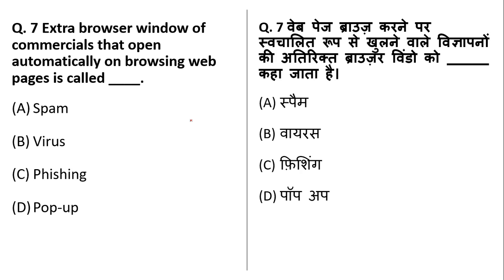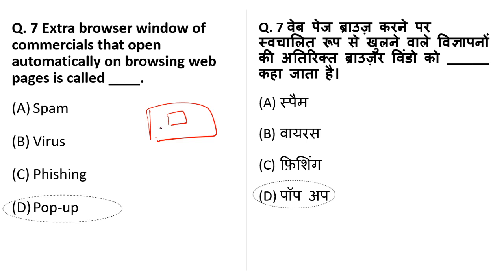An extra browser window of commercials that opens up automatically on browsing web pages is called a pop-up. Whenever you open a window and a small window opens automatically, that is a pop-up. Spam is unsolicited email, virus is malware, and phishing is when someone poses as an authentic person to grab your credentials or personal information. The answer here is option D, pop-up.